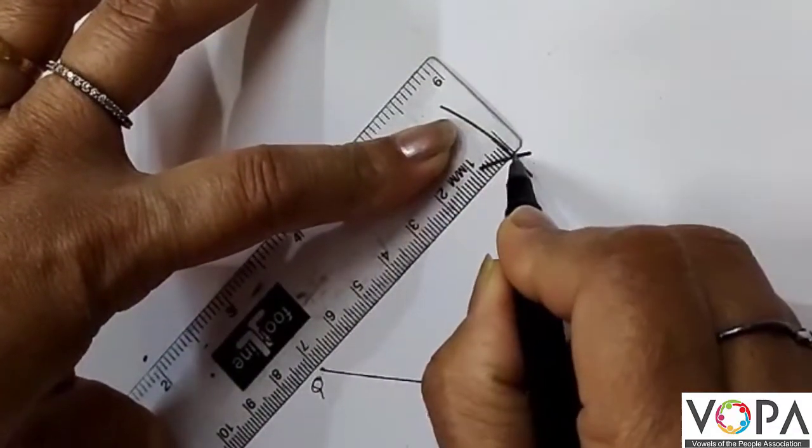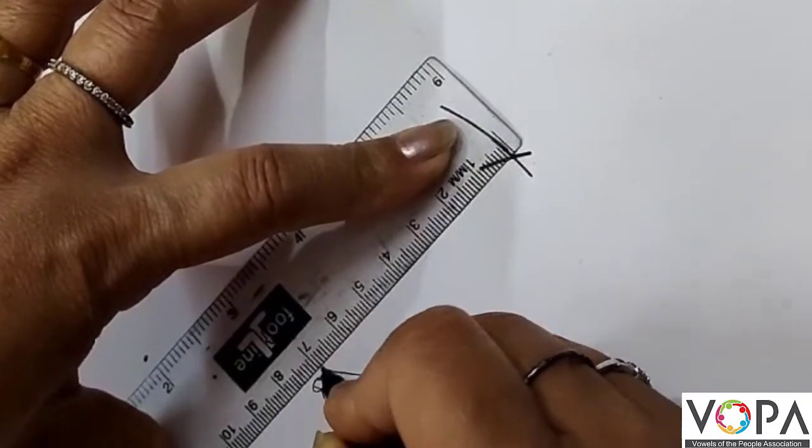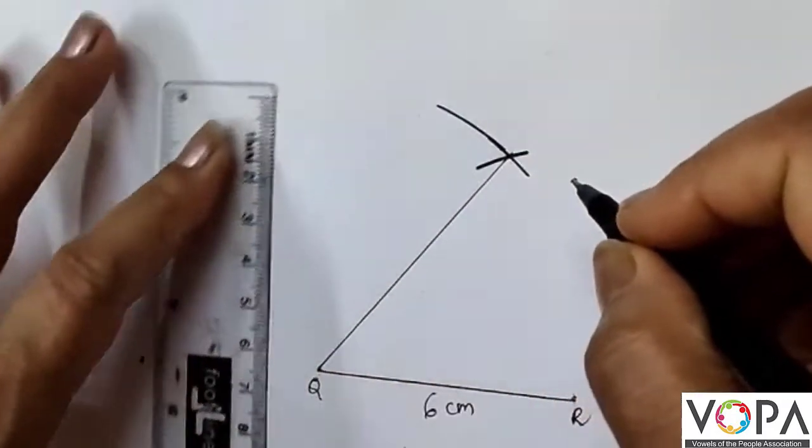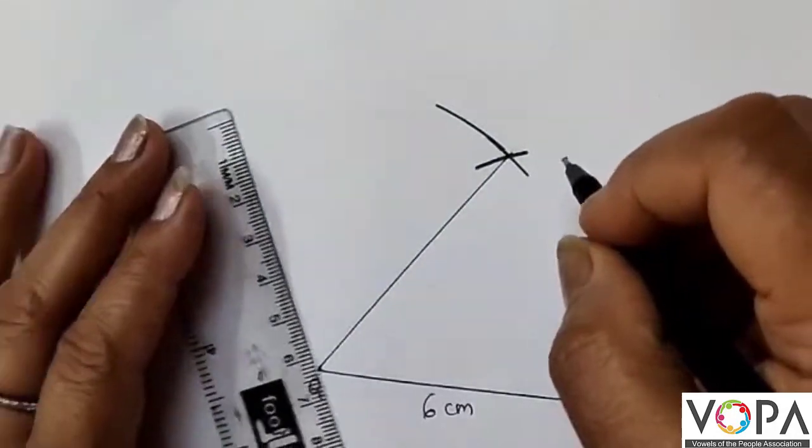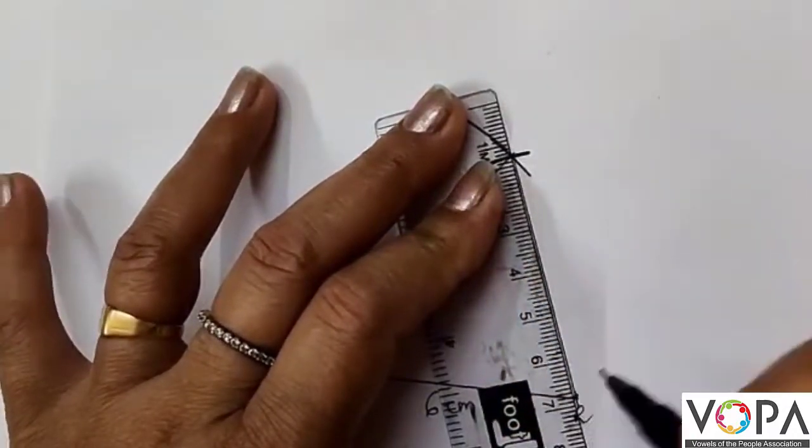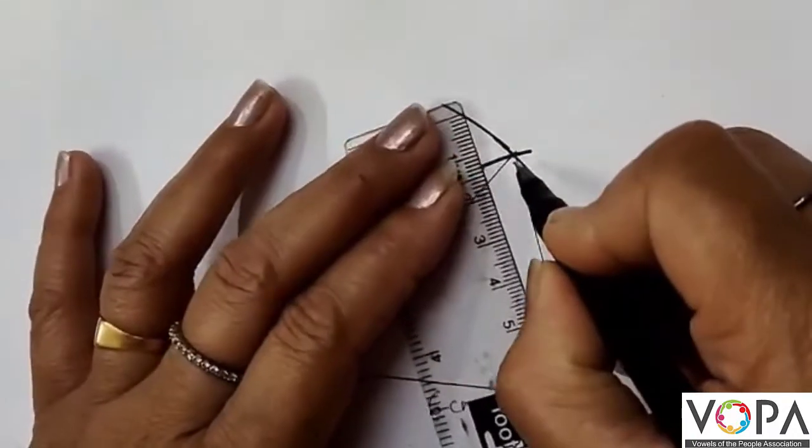Now draw these sides with a pencil. I am showing you with a pen so the lines are dark enough for you to understand. Join them this way, and from here also. So now this is the required triangle.